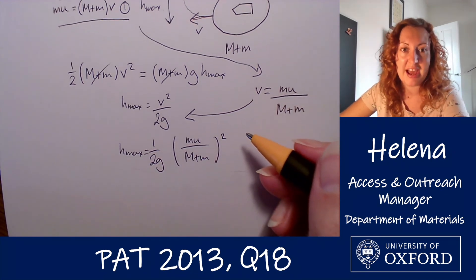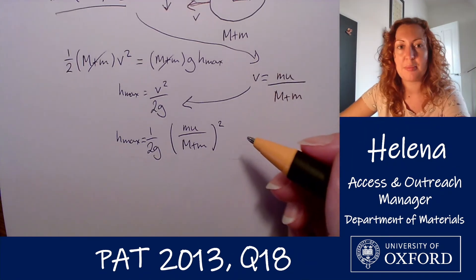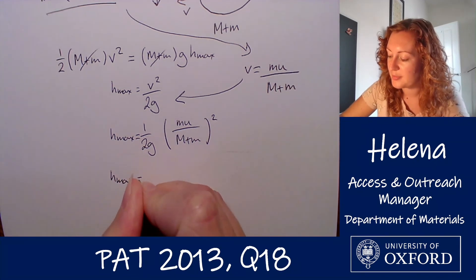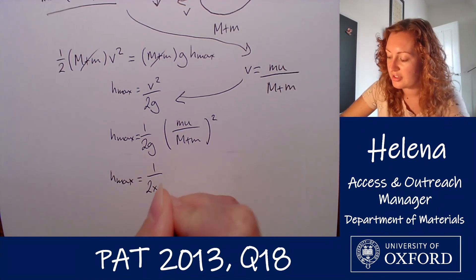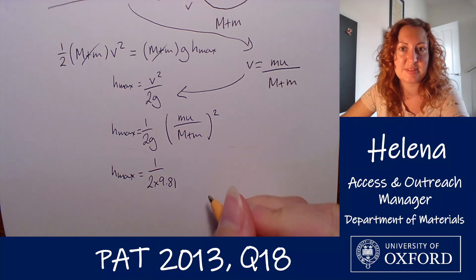So that's what we're going to do now. We have all of these values, they're up here, so now I'm going to put the numbers in. If I do that I find that h_max equals 1 over 2 times 9.81, which is the value for g that I'm going to use since there isn't one specified in the question.